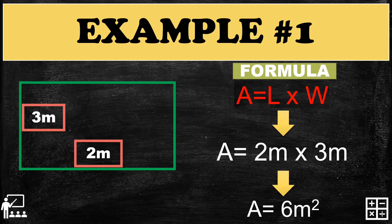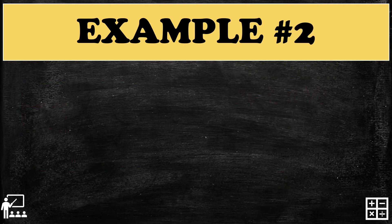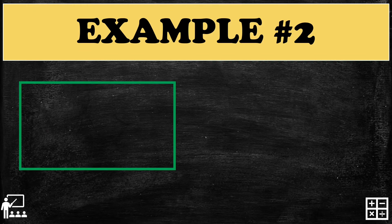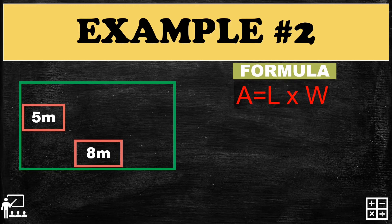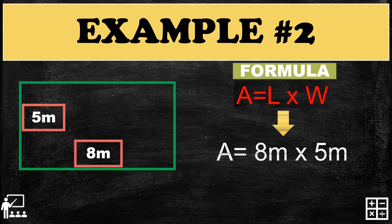Example number two: I have here a rectangle which has a width of five meters and a length of eight meters. We use the formula and substitute the measurements — the length is eight meters and the width is five meters.